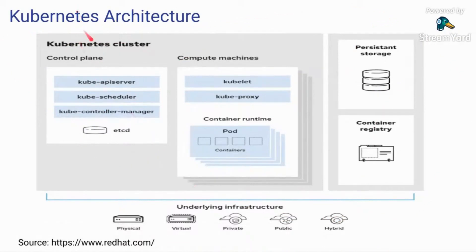Kubernetes is also called K8s. Between the K and S there are eight characters, and that's why it's called K8s. You can use K8s and Kubernetes interchangeably.